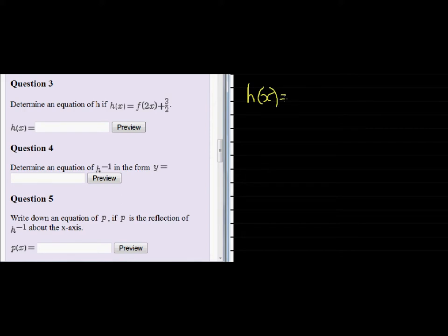H(x) is equal to F of 2x plus 3 over 2. But we know what F is. F is 2 over 3 to the power of x. But now instead of x,